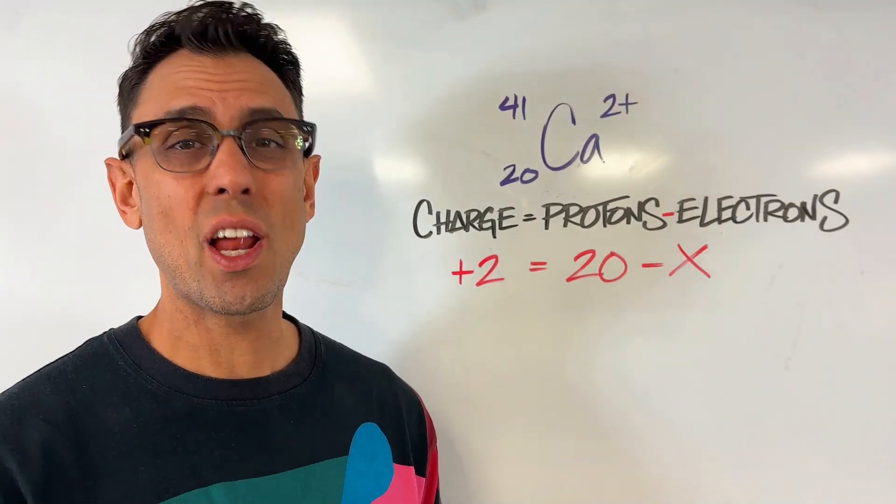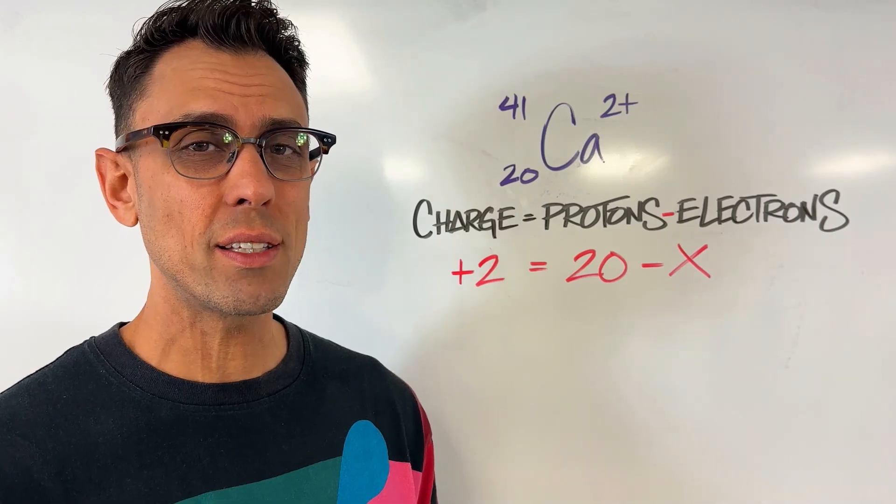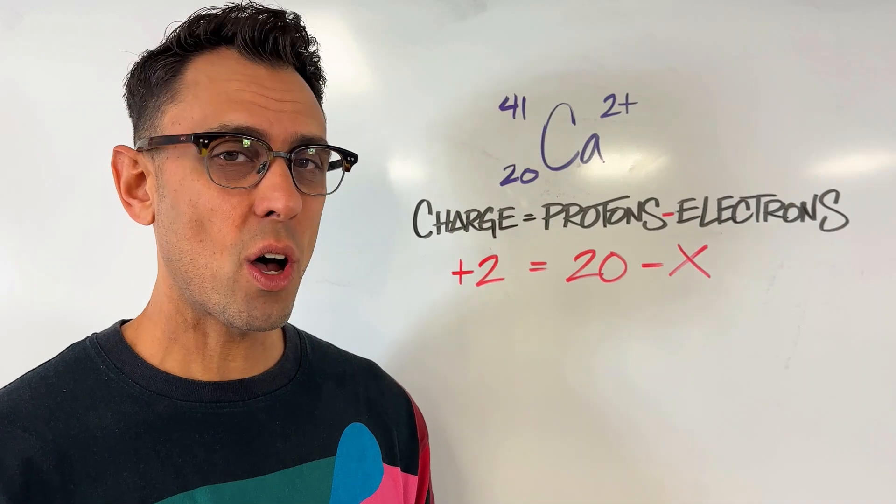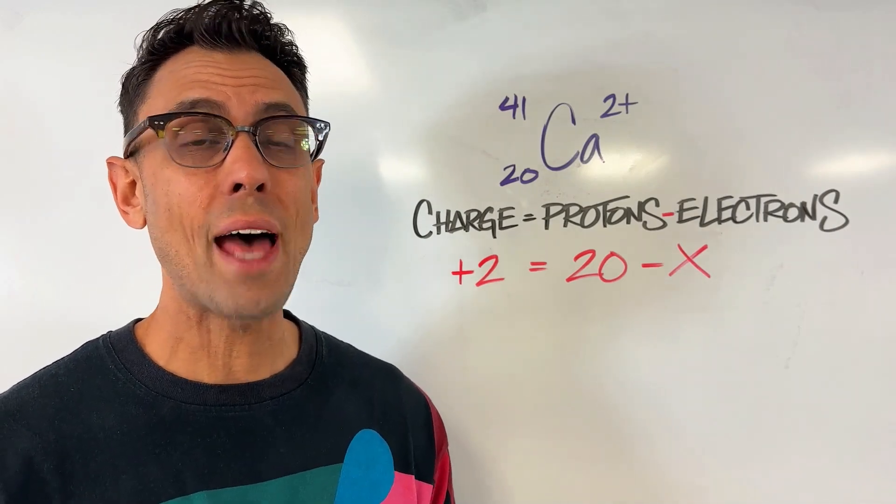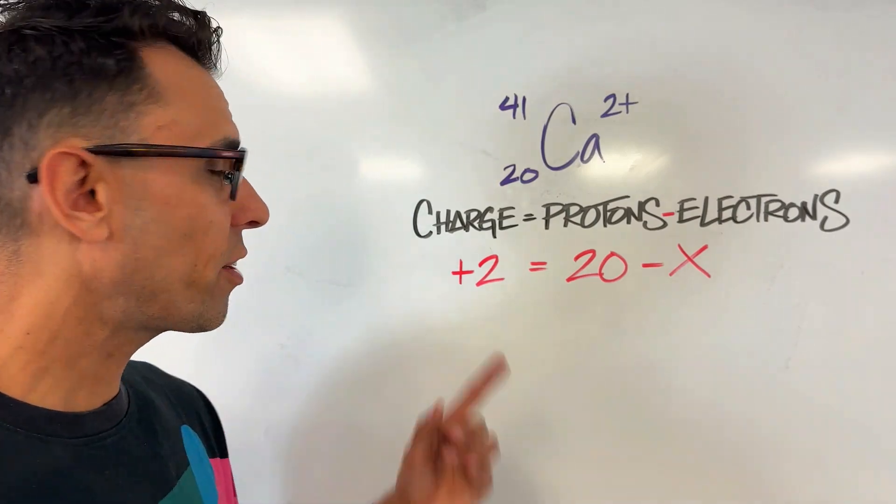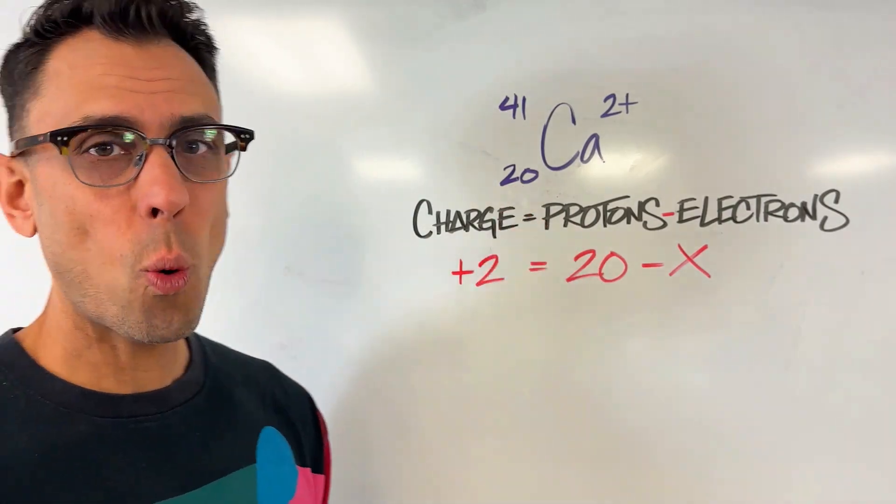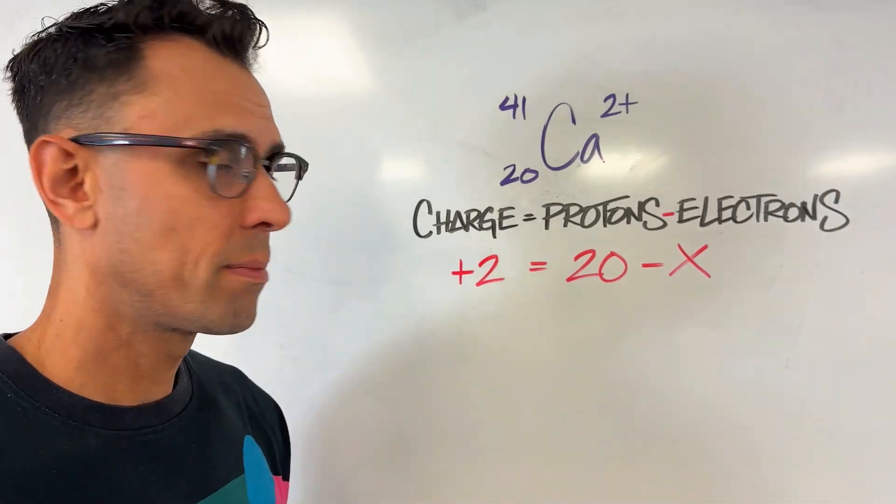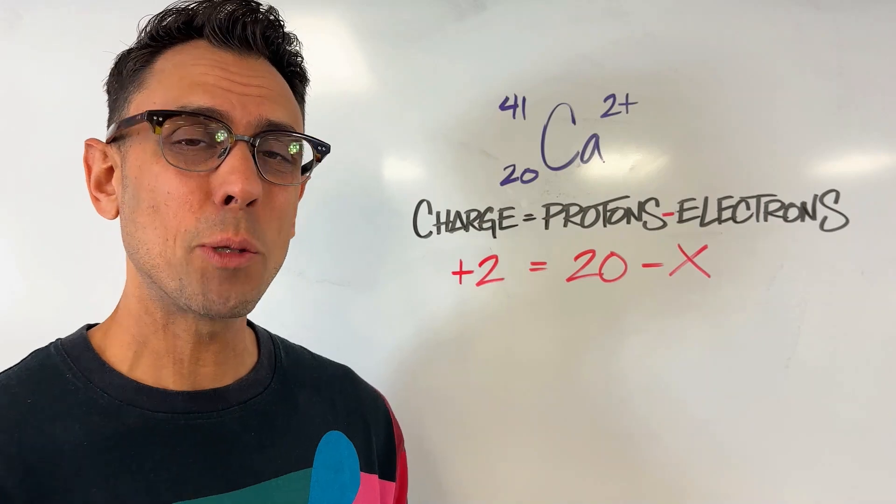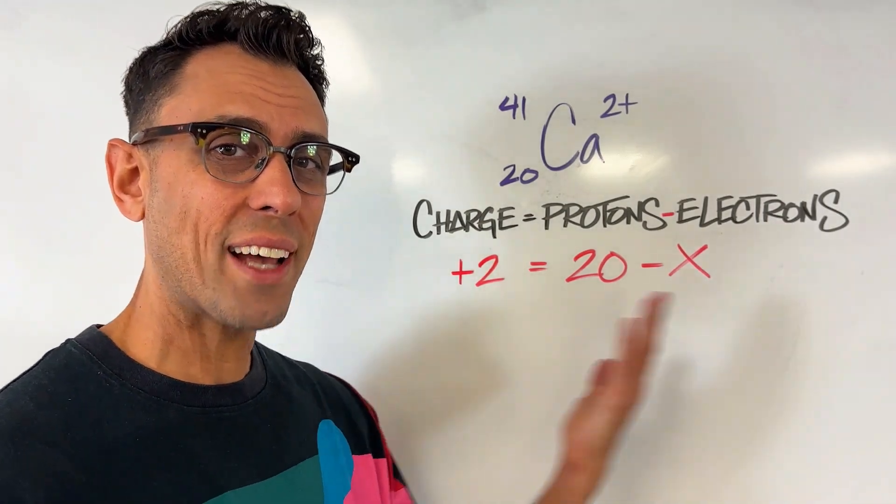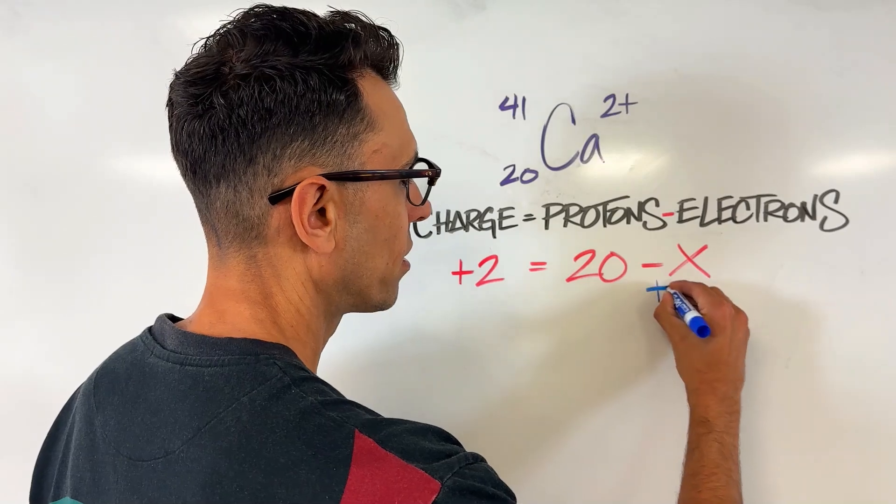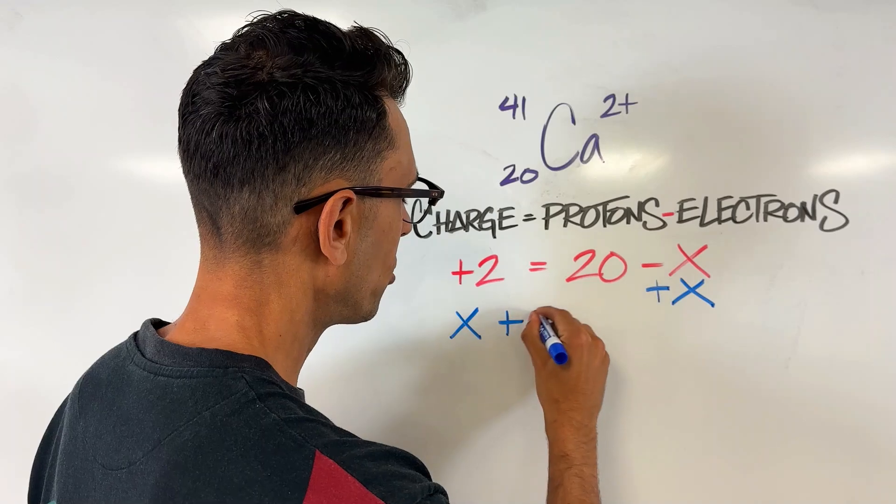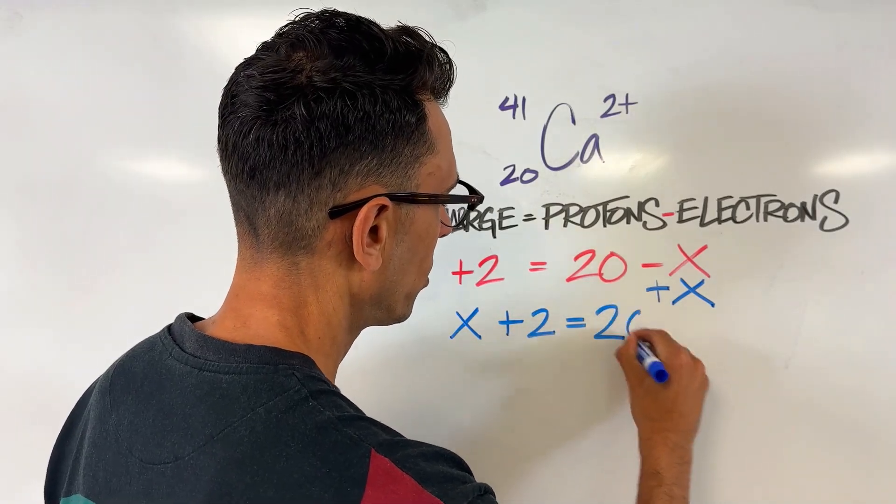We know this calcium atom does not have the same number of protons and electrons because we see a charge of 2 plus. We're going to use the same exact equation to solve this problem for how many electrons this atom does have. Okay, the charge is plus 2. The number of protons is 20, as indicated by the atomic number. And our x, or unknown, is the number of electrons. Now once again, I'm going to follow the same steps that I did in the previous example. First, I'm going to move the x to the left side using addition. So that's going to give me x plus 2 equals 20.